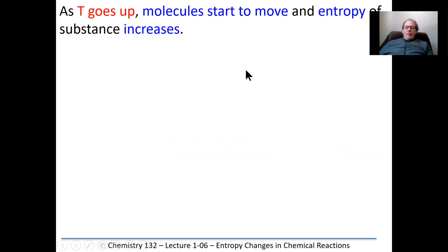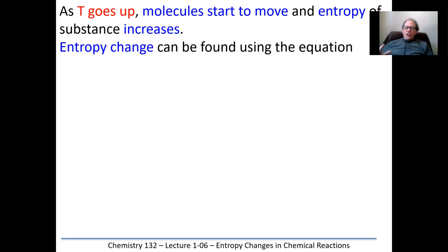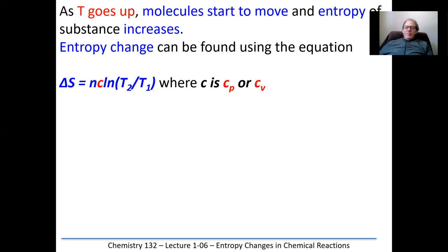As the temperature goes up, molecules start to move and the entropy of the substance increases, because there are more probable states at a higher temperature. Entropy change can be found using an equation on your information sheet. The entropy change equals the number of moles times a specific heat capacity — either Cₚ or Cᵥ depending on whether it's constant pressure or constant volume — times the natural log of T₂ over T₁. That comes from dQ reversible over T.